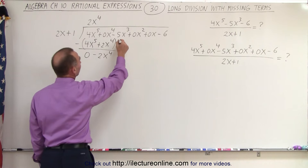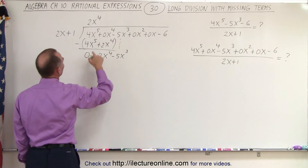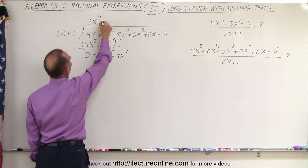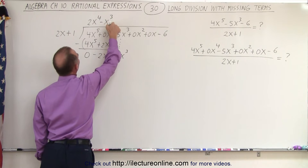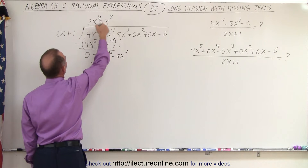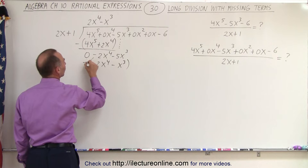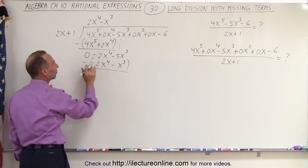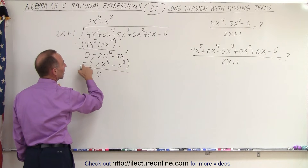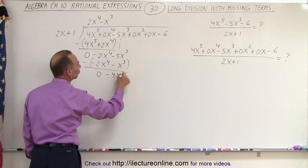Now we drop down the next term, which is minus 5x to the 3rd, and now we ask: what times 2x gives us minus 2x to the 4th? It looks like minus x cubed. Minus x cubed times 2x gives us minus 2x to the 4th, and minus x cubed times 1 gives us minus x cubed. We subtract those from the two above: this minus this gives us 0, and minus 5x cubed — minus times a minus makes it plus — so plus x cubed minus this gives us minus 4x cubed.